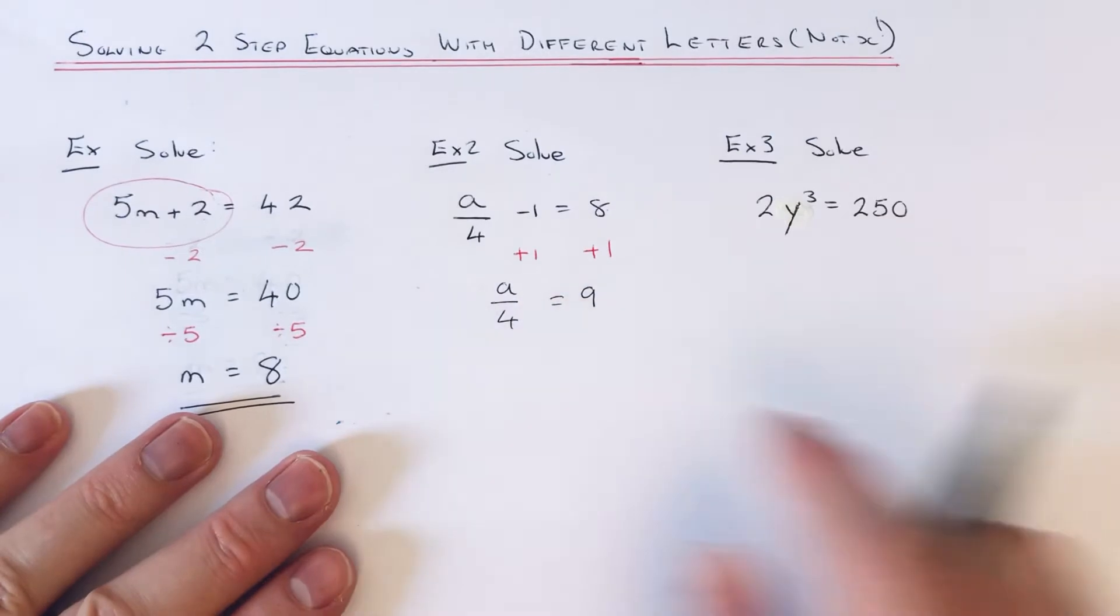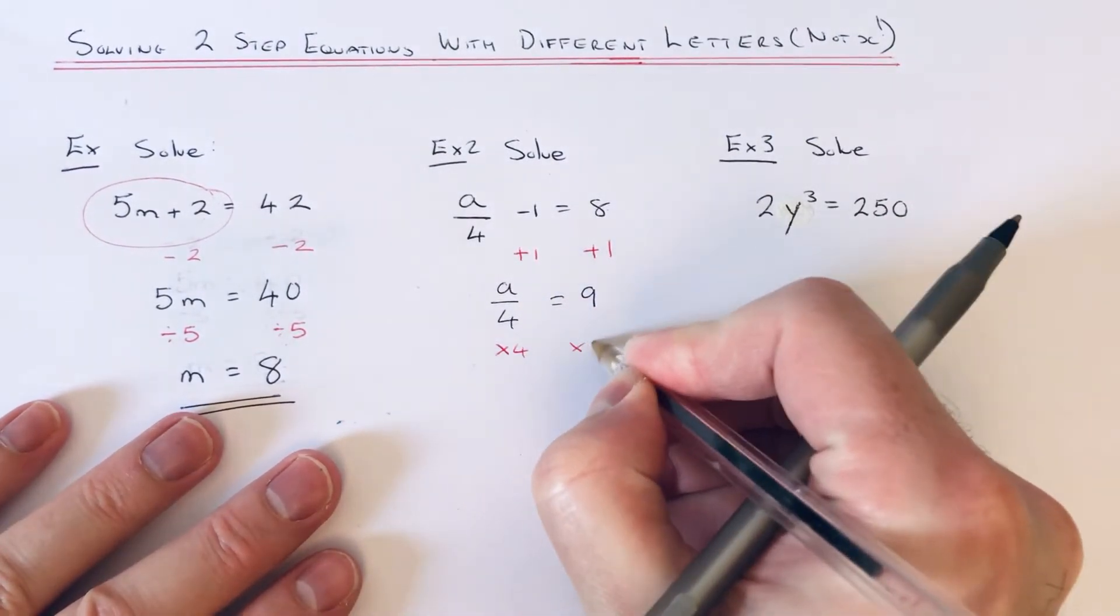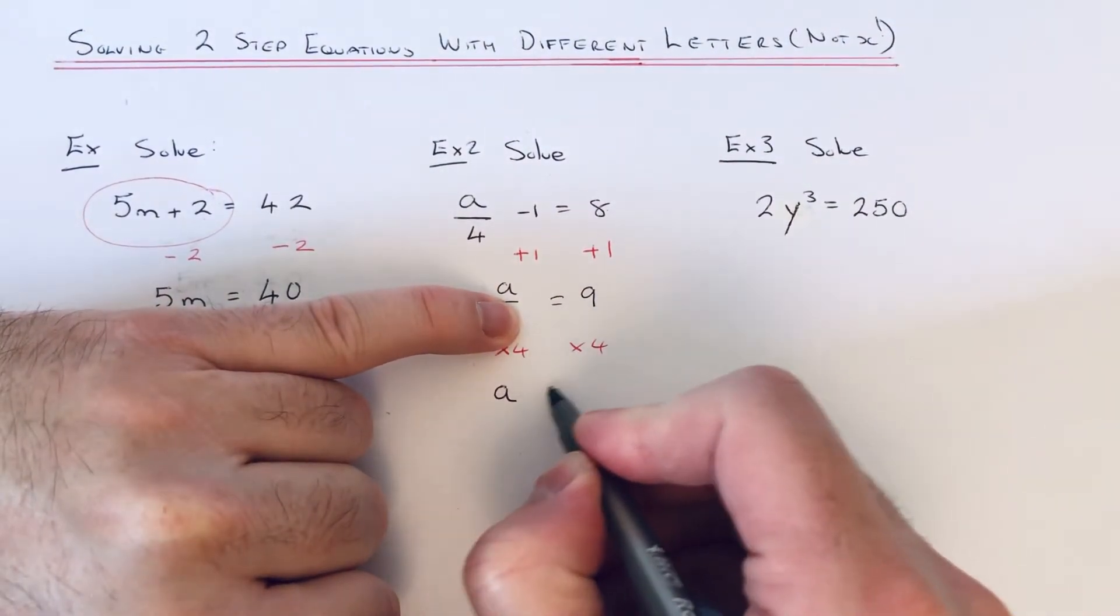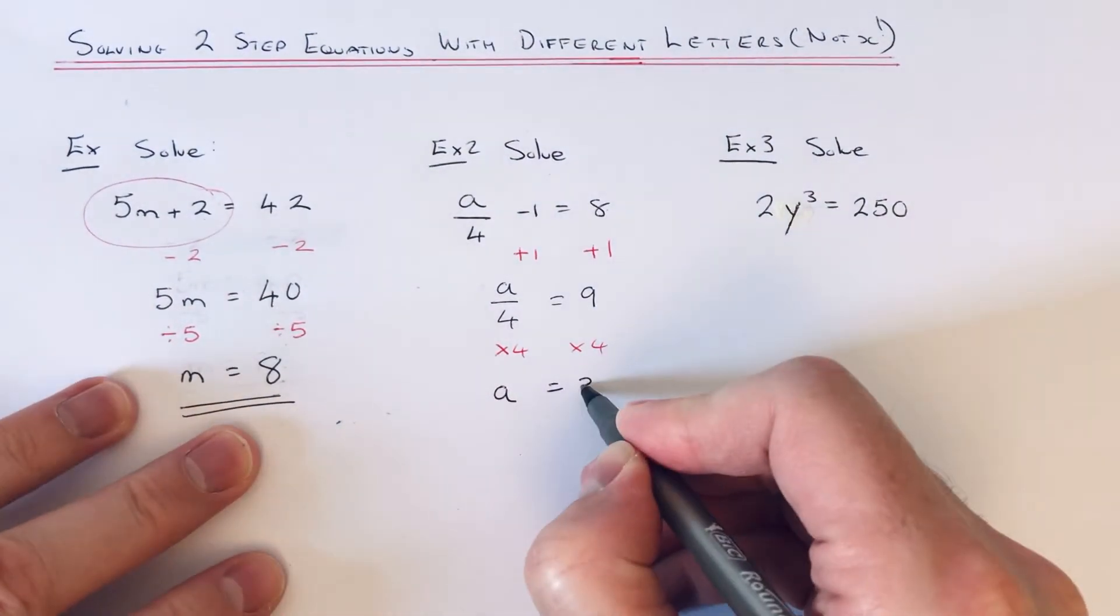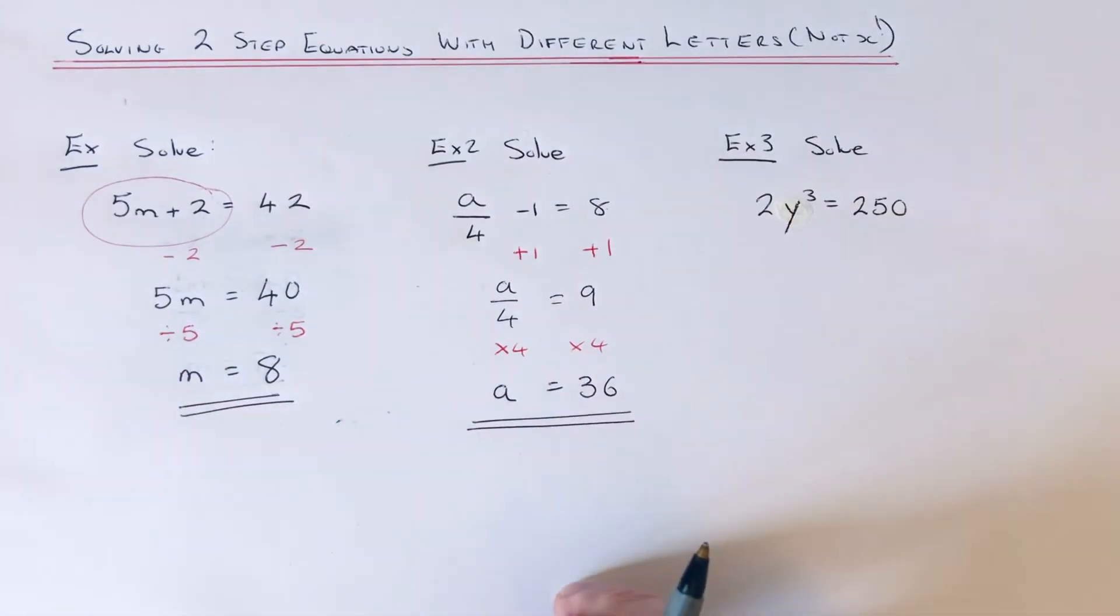So the next opposite is to do the opposite to the divide by 4, which is times by 4. So that will cancel out the 4 and leave us with a. Work out the right. 9 times 4 is 36. So that is our final answer.